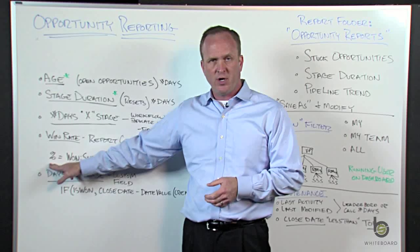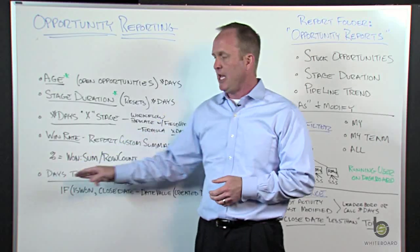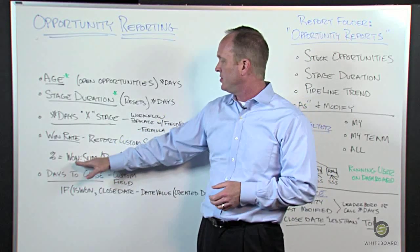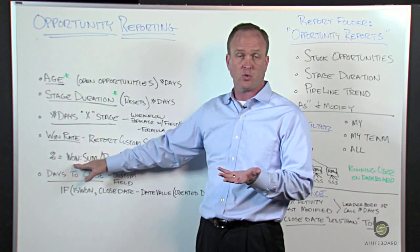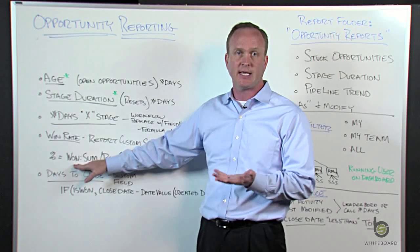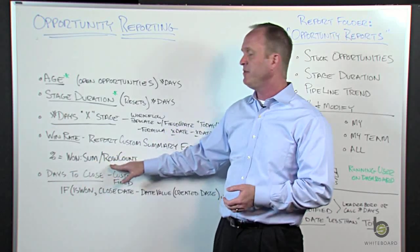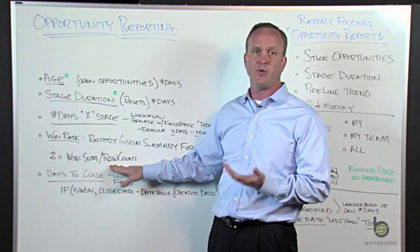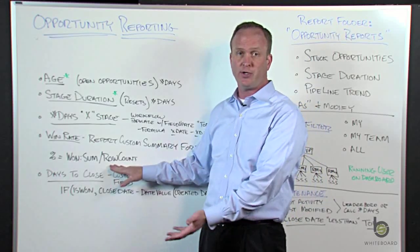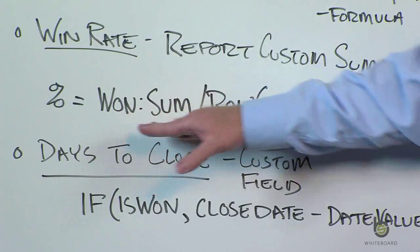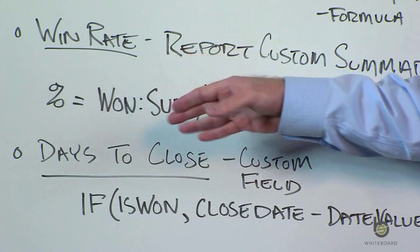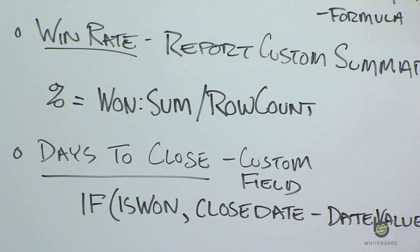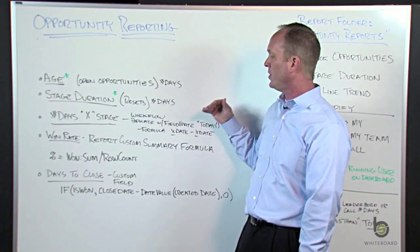You create one with the output of a percentage. There's a field called Won, which is all your closed-won opportunities. You summarize that to get a count of won opportunities, and you divide that by the row count of all your opportunities. So won opportunities divided by all opportunities gives you your win rate, which you can show as a percentage and group by on your reports.